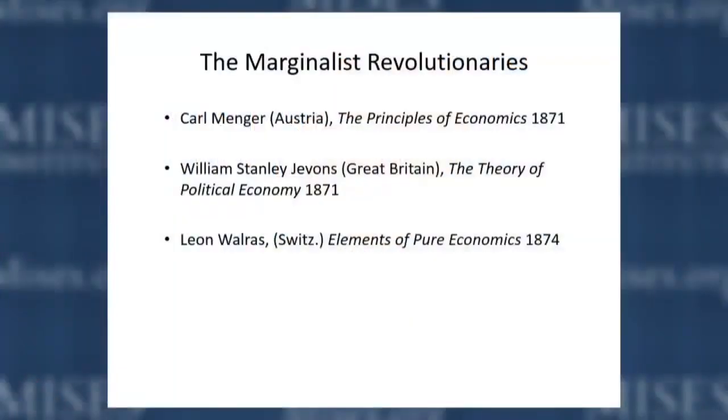Before we talk about Menger, let me talk about the environment he arose out of. In the 1870s there was a radical change in economics — an event called the Marginalist Revolution. It refers to the simultaneous independent discovery by three different economists of what's sometimes called the law of marginal utility. One was the Austrian economist Carl Menger, who wrote Principles of Economics in 1871.